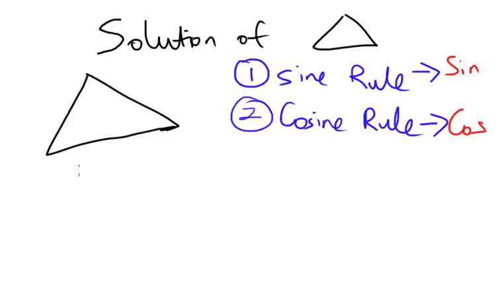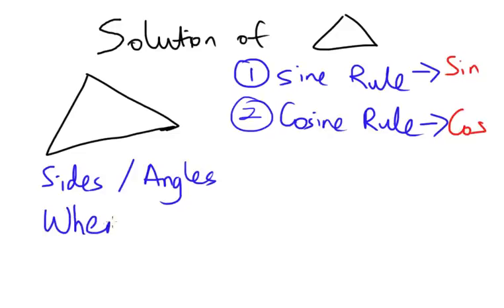For sine rule, what are we going to use it for? It is helping us to find any missing length of your triangle or any missing sides of your triangle or any angles that is missing. But when are we going to use sine rule? You are going to use sine rule when you have a pair.